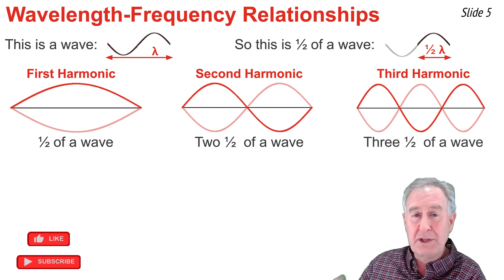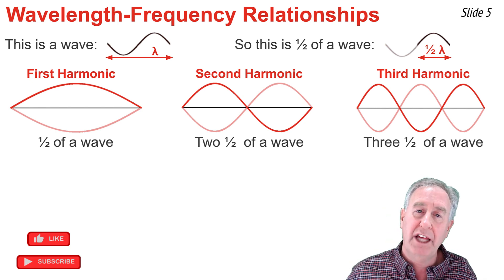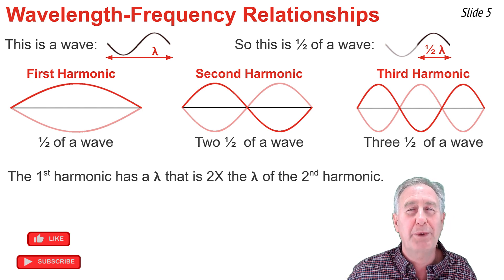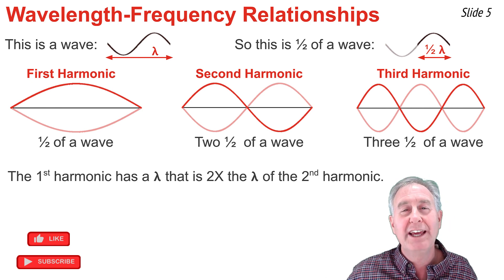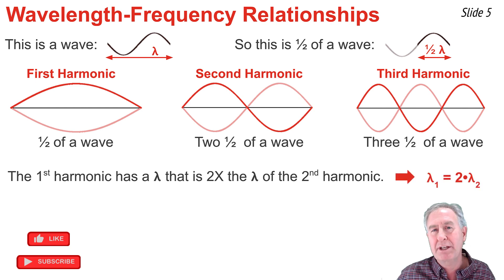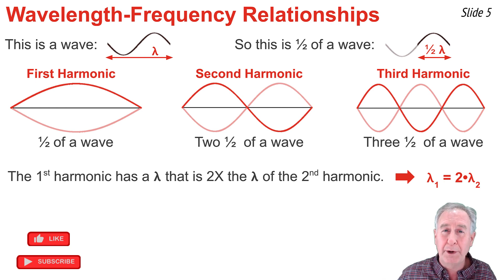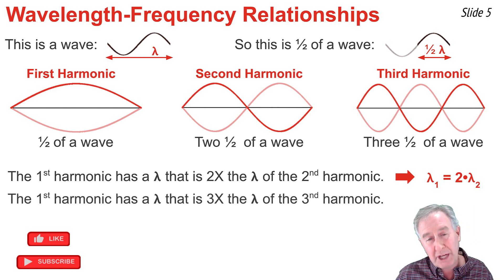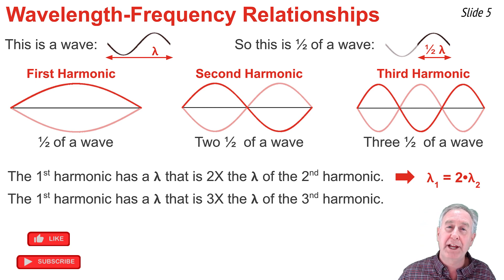Considering this data, I can make the following claim: the wavelength of the first harmonic is two times bigger than the wavelength of the second harmonic. In symbol form, lambda subscript 1 is equal to two times lambda subscript 2, where the subscripts refer to the harmonic number and lambda refers to the wavelength. I can also claim that the wavelength of harmonic number one is three times the wavelength of harmonic number three — in symbol form, lambda₁ equals three times lambda₃.